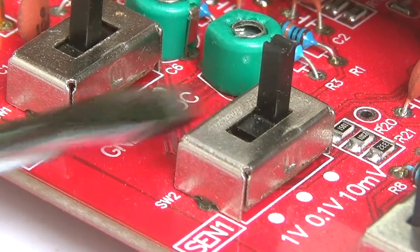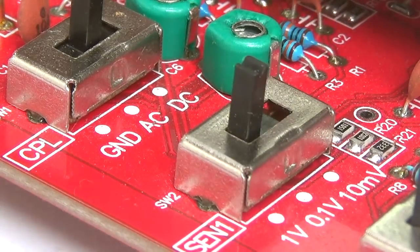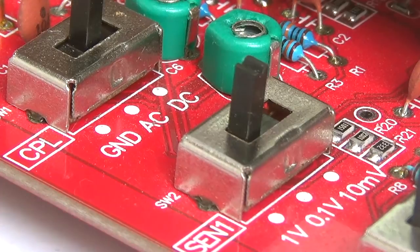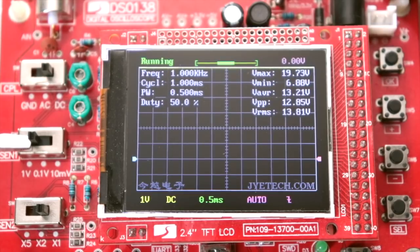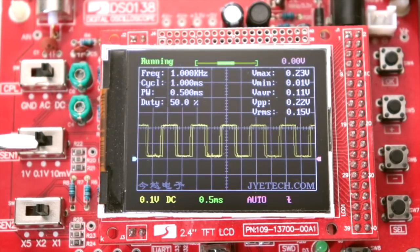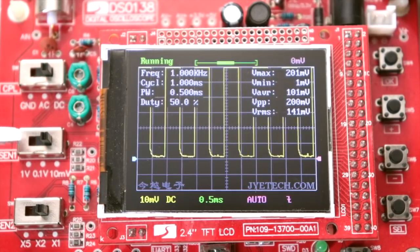Next switch is sense parameter. You can see there is written 1 volt, 0.1 volt, and 10 millivolts. Actually this scale is for 10 times bigger and smaller part division of wave view, which will make it easy to analyze your wave.